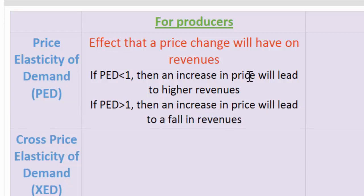Knowing how responsive their consumers will be to price changes allows businesses to make informed decisions about how they change the prices of their goods at any particular time. The total revenue test also helps businesses know when they should lower their prices as well.